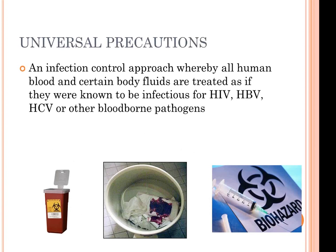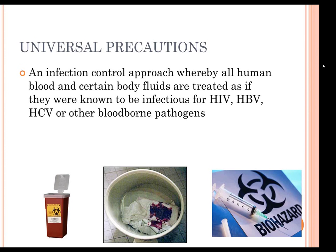Universal precautions means that regardless of the person or your relationship with them, if there is any possibility of exposure to secretions or blood, you are going to act in a certain way to protect yourself. Any infection control approach whereby all human blood and certain bodily fluids are treated as if they were known to be infectious for HIV, hepatitis B, hepatitis C, or other blood-borne pathogens.